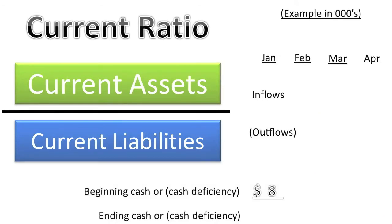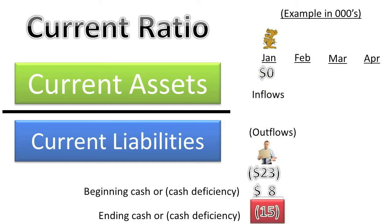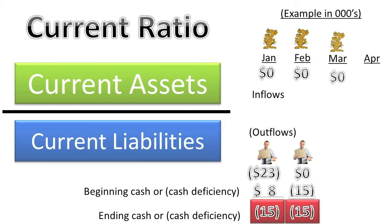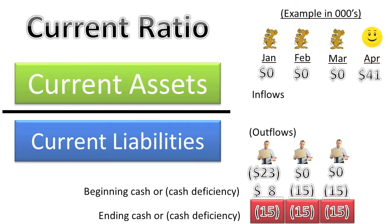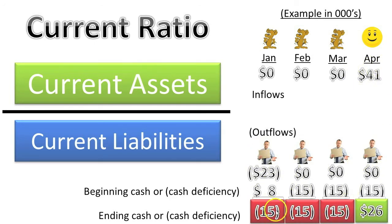In the real world, it is possible that even though a company's current ratio is greater than 2 — indicating that it is probably liquid — its current liabilities could actually come due faster than it is able to convert its current assets into cash to pay them. For example, assume there are no cash inflows in January but current liabilities must be paid, resulting in an outflow. Starting with $8 cash but facing a $23 outflow with no inflows puts the company in a cash deficiency position. With no collections in February or March, the deficiency persists. Finally, in April, collecting $41 from accounts receivable and inventory restores a positive cash position — but the outflows were much earlier than the inflows, creating a deficiency for three months.